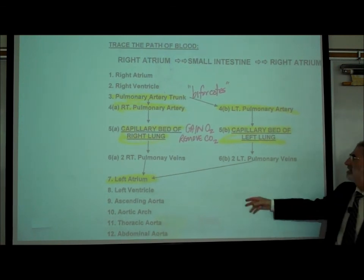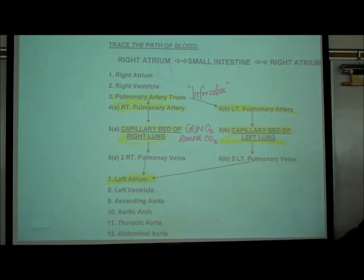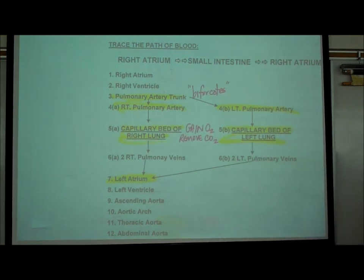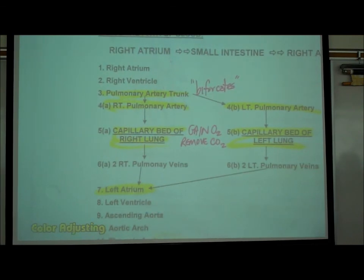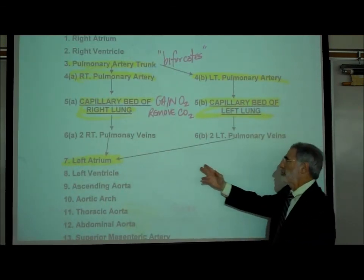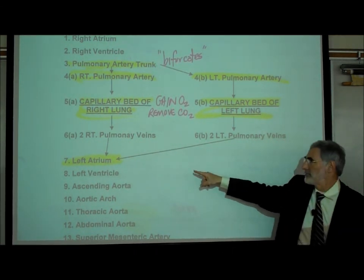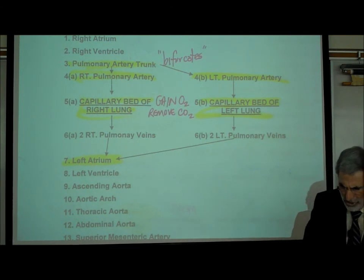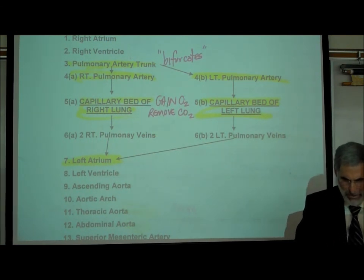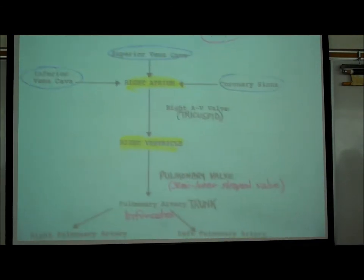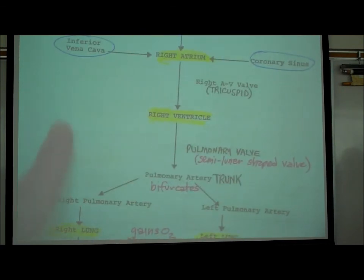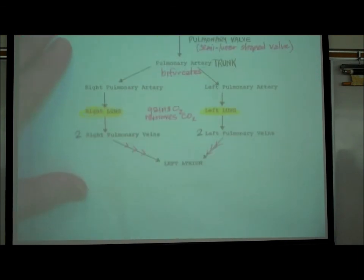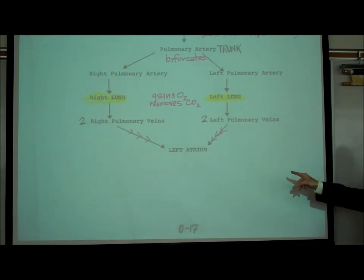The pulmonary artery trunk bifurcates into a right pulmonary artery and a left pulmonary artery. These bring blood to the capillary beds of the lungs, where blood picks up oxygen and gets rid of CO2. The blood then comes back through four pulmonary veins — two from the right lung, two from the left — to the left atrium. This was also shown on page 017's flow chart.